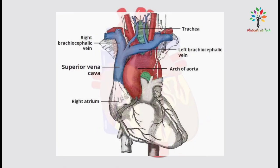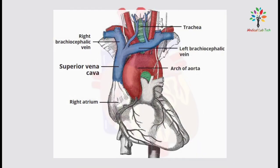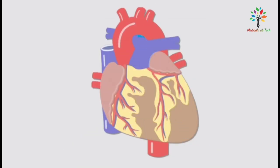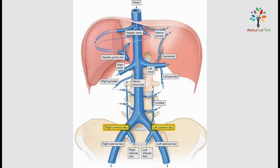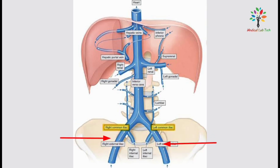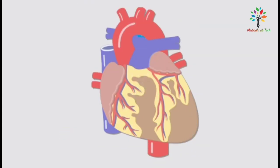The superior vena cava is formed by the union of the left and right brachiocephalic veins. The inferior vena cava is formed by the union of the right and left common iliac veins and ascends through the abdominal cavity into the right atrium of the heart.